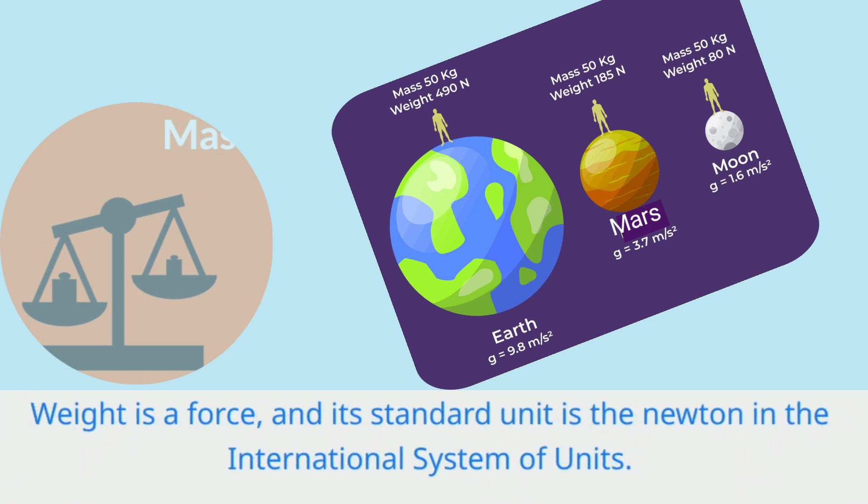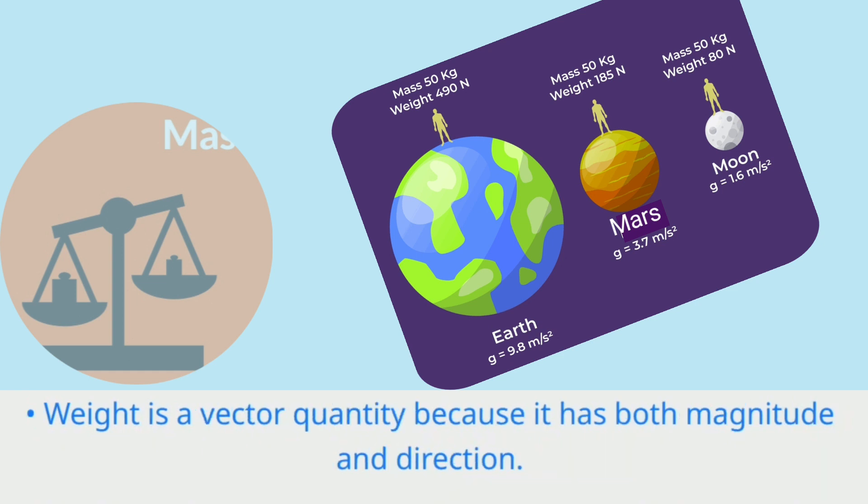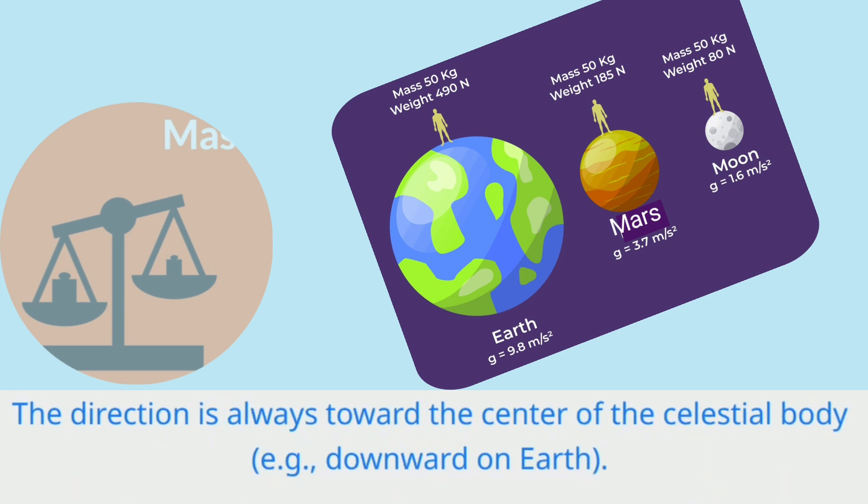Weight is a force, and its standard unit is the Newton in the International System of Units. Weight is a vector quantity because it has both magnitude and direction. The direction is always toward the center of the celestial body, for example downward on Earth.